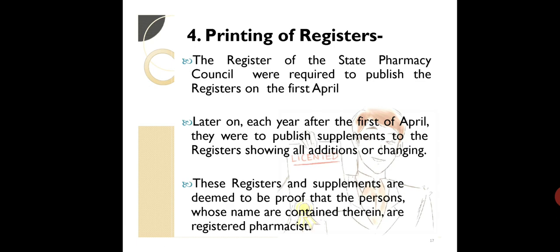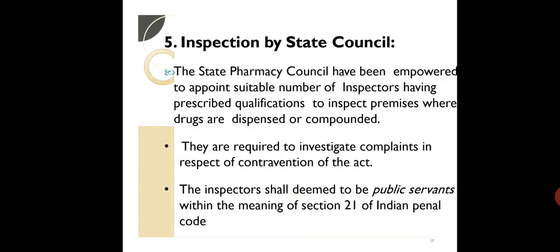The fourth function is printing of registers. The registrar of the state pharmacy council is required to publish the registers on the 1st of April each year, and thereafter publish supplements to the register showing all additions or changes. These registers and supplements are deemed to be proof that persons whose names are contained therein are registered pharmacists.